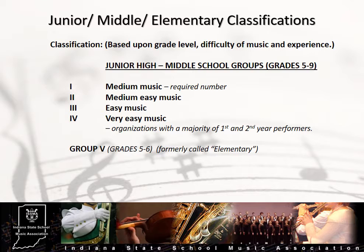In the junior/middle/elementary classification, you will most often see two types of instrumental ensembles: band and string orchestra. Full orchestra is also offered at the JME level. Students participating in this event encompass grades 5 through 9. There are five group levels offered in the JME classification. Group 5, formerly known as elementary, consists of beginning first-year players in grades 5 and 6 playing very easy music. Group 4 is for ensembles also consisting of a majority of first- and second-year players performing very easy music.